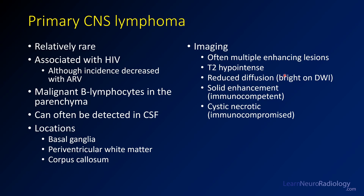On imaging you'll typically see multiple enhancing lesions. T2 hypointensity is a nice characteristic to look for, and you'll see brightness on DWI with reduced diffusion on ADC. Most commonly in immunocompetent patients there is solid enhancement, although lesions can appear cystic and necrotic in immunocompromised patients such as those with HIV.